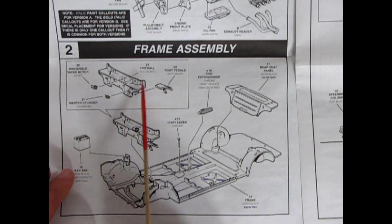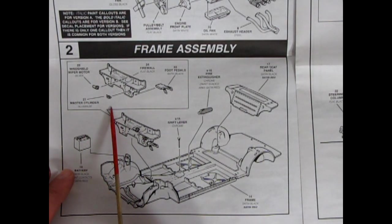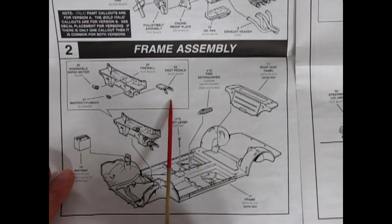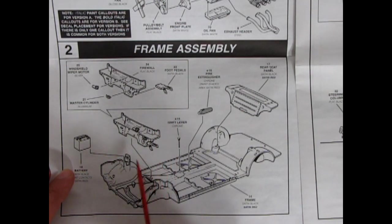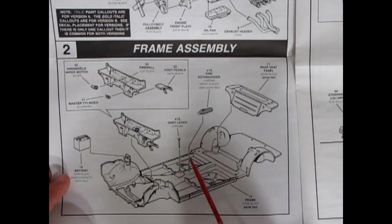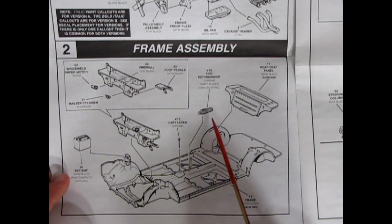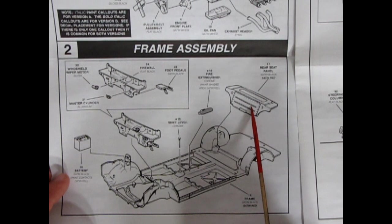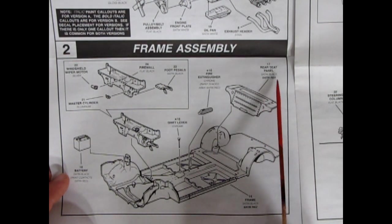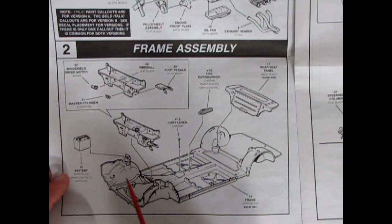Okay then we have our frame with a firewall, windshield wiper motor and a master cylinder for your brakes. Your foot pedals are going in here. This drops into this chassis. You get the shift lever and fire extinguisher so the chassis is also the floor. Yes this is a race ready one because the rear seat panel has been covered over. And then our battery will drop into here.